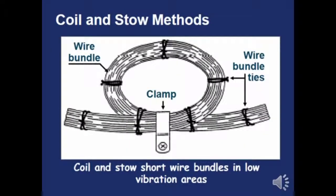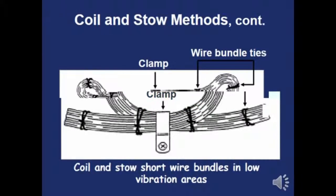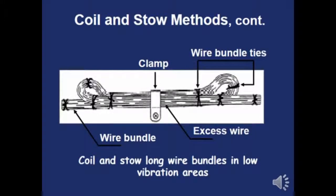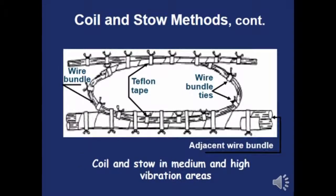In some cases there are longer wires than available space, so coil and stow methods are used. In a low vibration area, you can simply coil and stow the wires with a few bundle ties. You can also stow them differently. But in a high vibration area, notice how many more tie-offs are required to ensure there's no chafing during vibration.